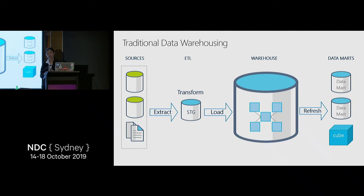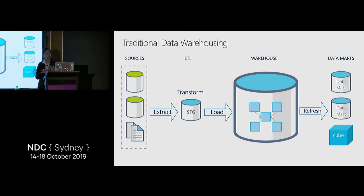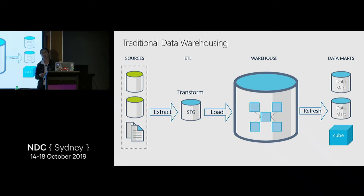For those from a data warehousing background, this should look very familiar. You have typical sources on the left — usually relational stores and flat files — an ETL process that transforms data into fact and dimension tables in your warehouse, possibly with a staging database in the middle. Finally, you have your reports populated from your data warehouse.